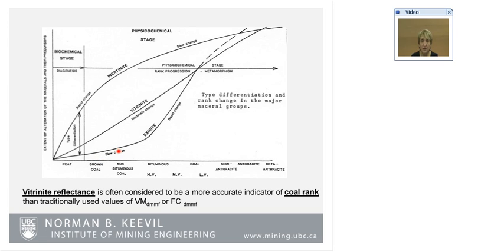As opposed to other macerals, the exinite — liptinite — which includes spore and cutinite type material, shows quite different coalification tracks when you determine reflectance on them. Vitrinite is the maceral that follows the coalification track most reliably, making it a very accurate indicator of coal rank. In many cases it can better represent the organic material than volatile matter or fixed carbon calculated from proximate analysis.